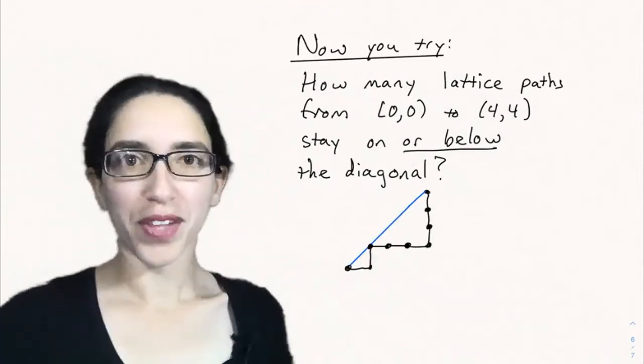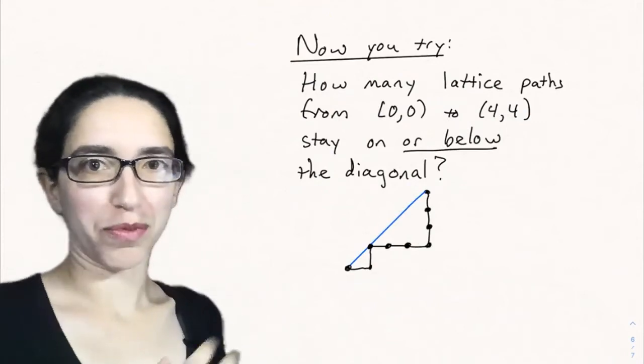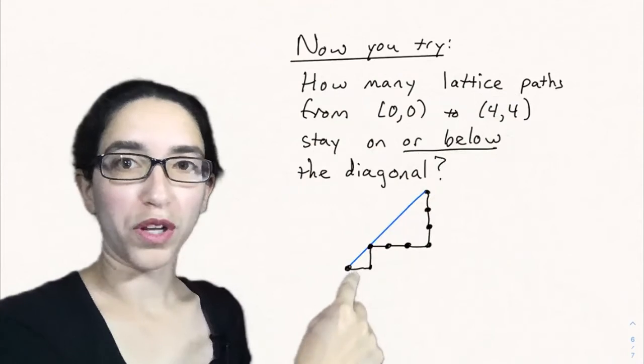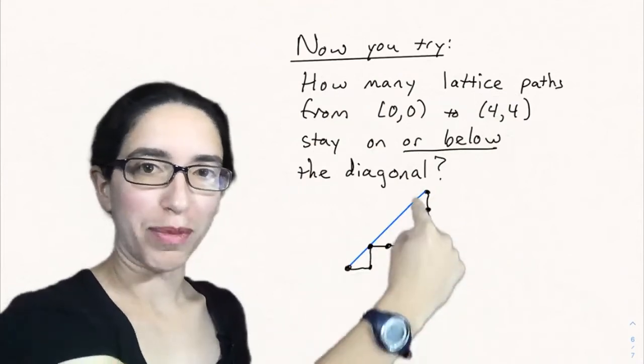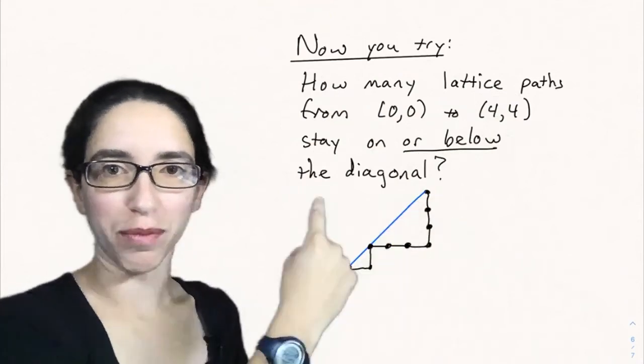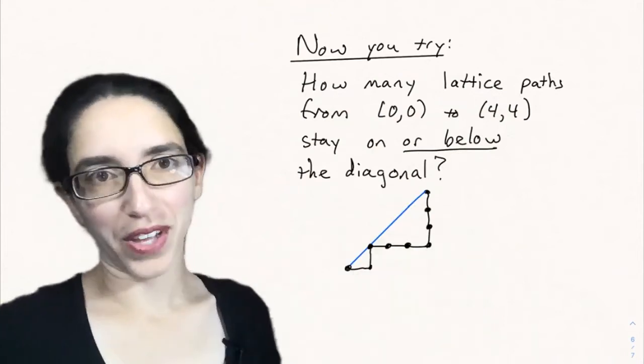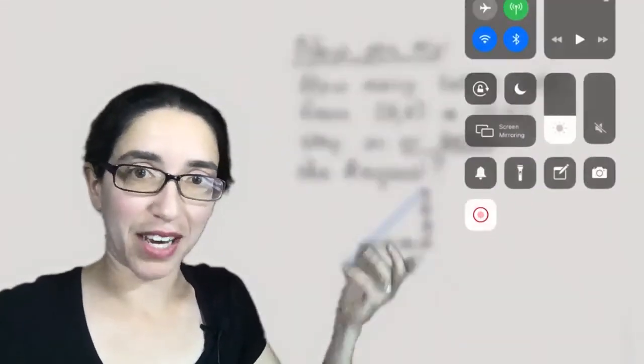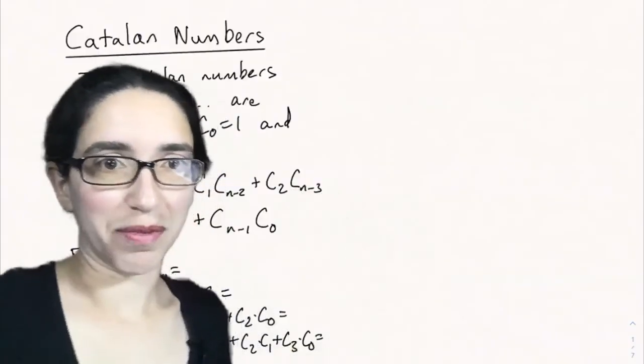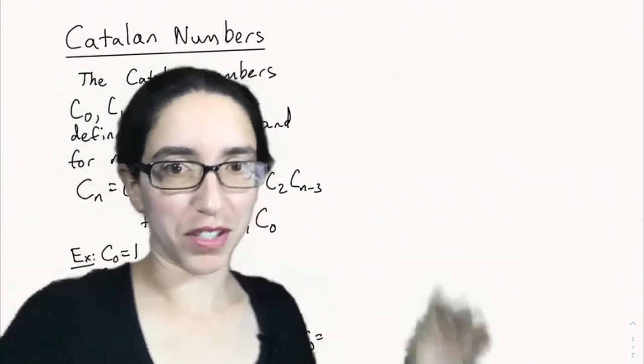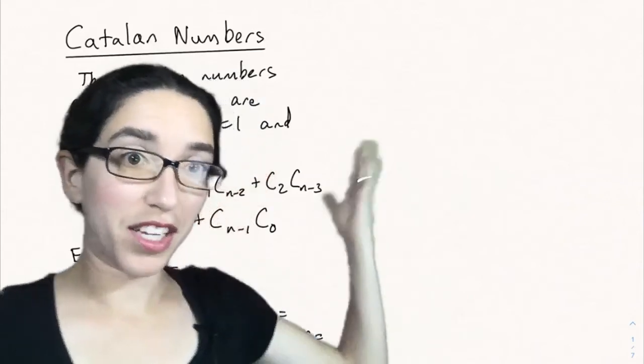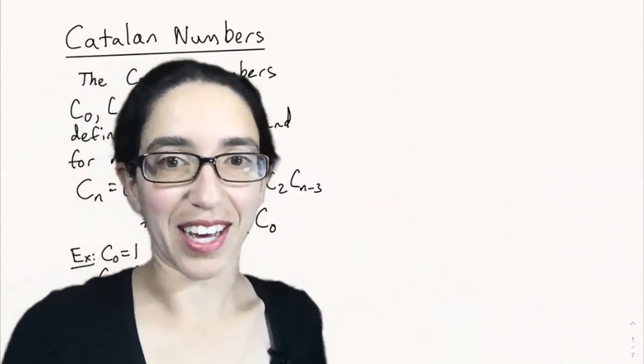Now you try. How many lattice paths from (0,0) to (4,4) stay either on or below the diagonal? These are sort of like opposite Dyck paths. Instead of wanting to stay above the diagonal, we want to stay below. The hint is that these are actually pretty much the same as counting if it's above the diagonal. It's not much different there, because you can just reflect it to get back to a Dyck path. That's all I wanted to say about the Catalan numbers today. We'll see you next time.